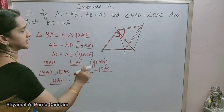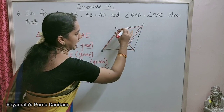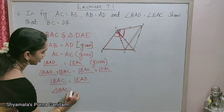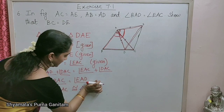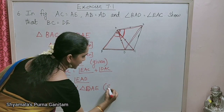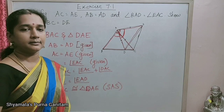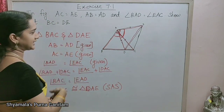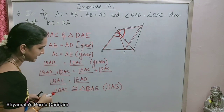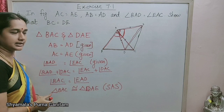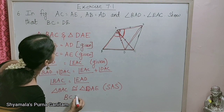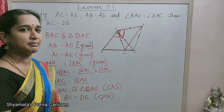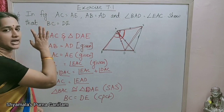One angle and two sides are equal for both triangles. So by SAS congruence, triangle BAC is congruent to triangle DAE. Since we have proved both triangles are congruent, by CPCT — corresponding parts of congruent triangles — we can say that BC is equal to DE, which is what we were asked to prove.